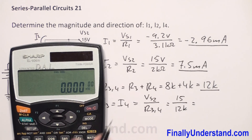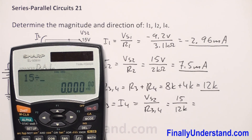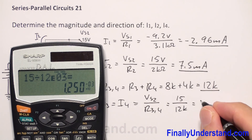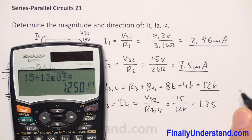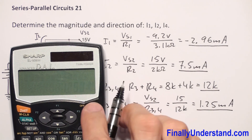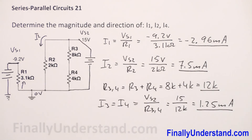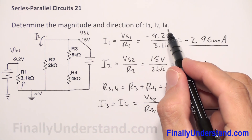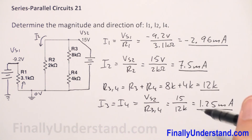So I have 15 volts divided by 12 times 10 to the 3, which equals 1.25 milliamps. So we found I1, we found I2, and we found I4, so we can say that the problem is solved.